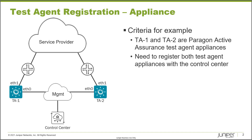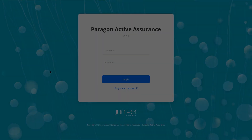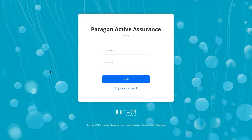The criteria for this example: we have TA1 and TA2 as test agents, and we need to register both test agent appliances with the control center. With that being said, let's get started.